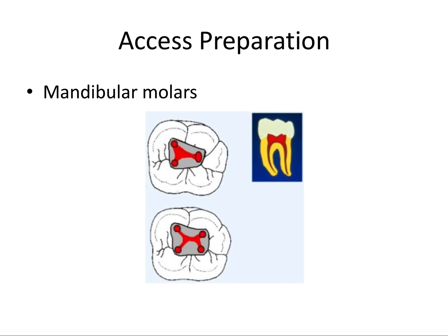Lower molars are a notch easier than maxillary molars since there's no MB2 canal to worry about. The majority of these teeth have two roots, but the distal root more often than not houses two canals itself, so the most common arrangement is three canals per tooth — though four canals total is possible. These are also often referred to endodontists. For boards, this access prep shape is known as a trapezoidal access.